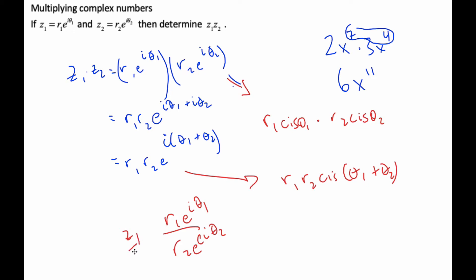This would be z1 divided by z2. Well, similar to the exponent rules, I end up dividing the coefficients, and it's e to the i theta1 minus theta2.